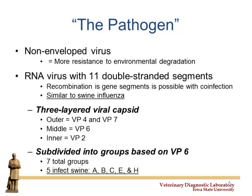Rotavirus has a three-layer capsid — an outer layer, a middle layer, and an inner layer. There are separate proteins on each layer: VP4 and VP7 are the outer proteins, VP6 is the middle protein, and VP2 is on the inside. When we look at this virus, we break it down into groups A, B, or C based on their middle layer, the VP6. We're just taking a portion of that capsid and asking, is this A, B, or C?